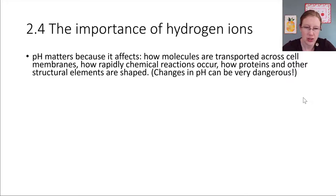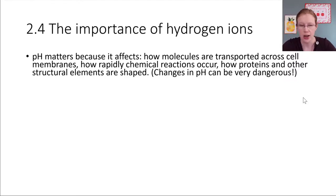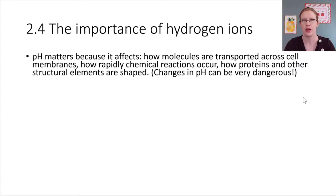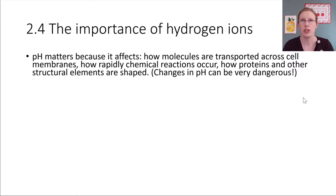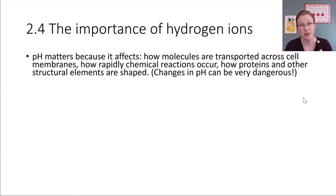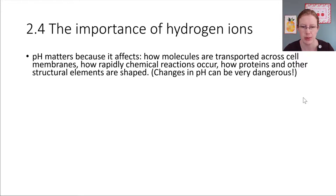In human biology, hydrogen ions are super important because their presence — in other words, the pH — will affect a lot of things going on inside our bodies. It affects whether our cells can take substances in, which chemical reactions can take place, and the shape of certain molecules like proteins, which we'll be talking about in a moment in this chapter.